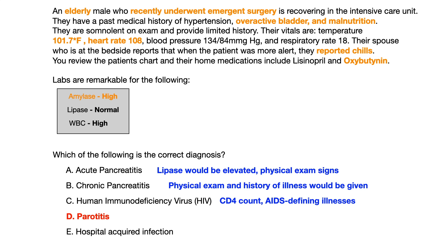In the case of HIV, you would have needed either a CD4 count — which was never given — or an AIDS-defining illness pointing you in that direction. None of that was provided. The closest thing given to HIV was simply a fever and tachycardia, which is not enough to push you toward selecting an answer with so many more associated findings. So at this point, you're not seeing evidence of pancreatitis or HIV.